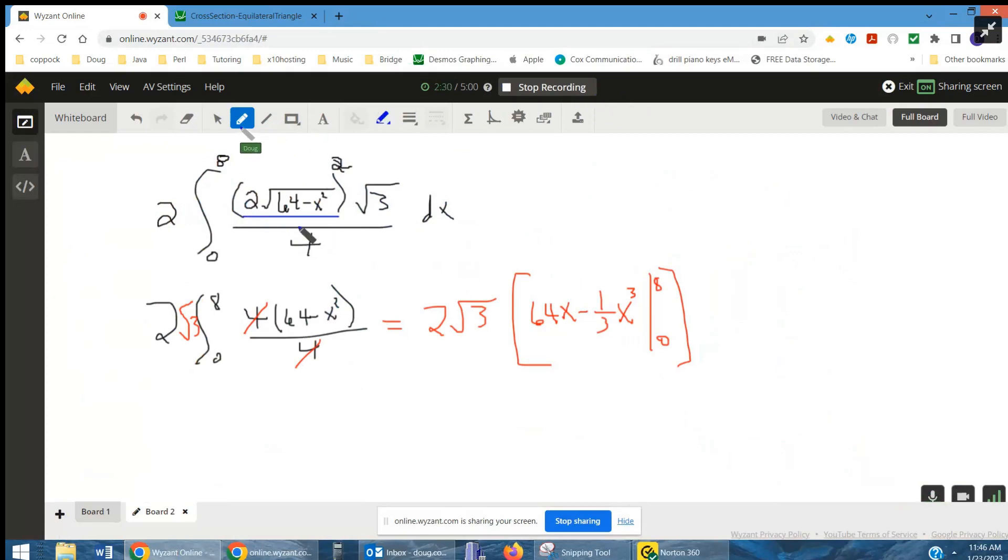And so the area of a cross section is s squared radical 3 over 4. You have to know that formula for the area of an equilateral triangle, s squared radical 3 over 4.